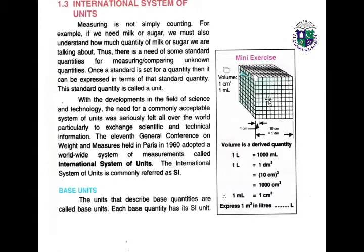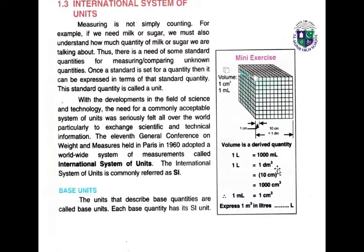The international system of units: measuring is not simply counting. To measure quantities like milk or sugar, we need to understand how much quantity is needed, and we have a proper system called the international system of units. With the development in science and technology, the need for a commonly acceptable system of units was felt worldwide, particularly to exchange scientific and technical information. The 11th General Conference on Weights and Measures, held in Paris in 1960, adopted a worldwide system of measurements called the International System of Units, commonly referred to as SI.